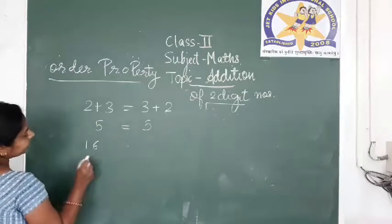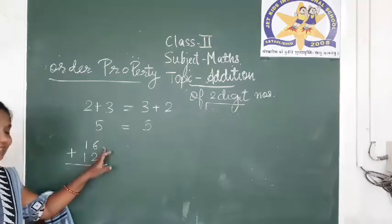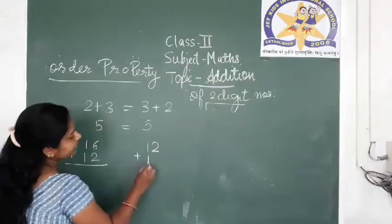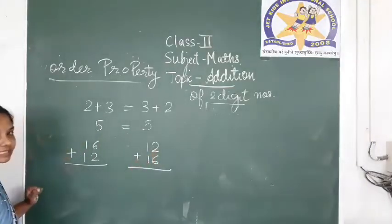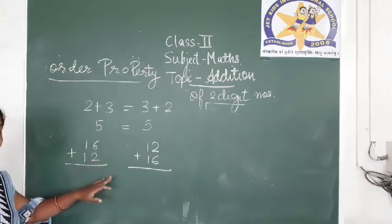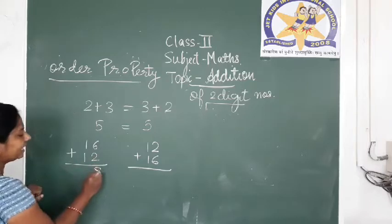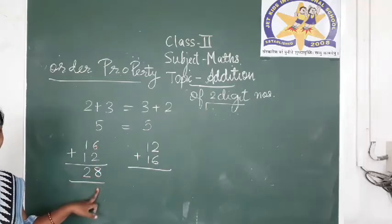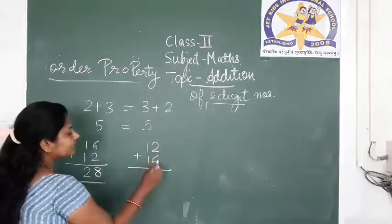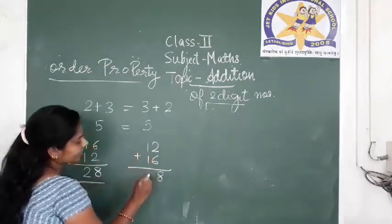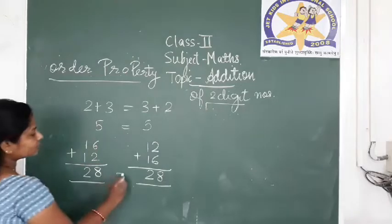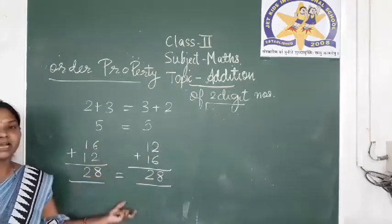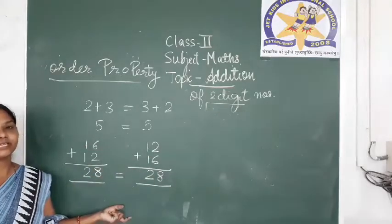For example, 16 plus 12: you are adding 16 to 12. If I change the order — that is 12 plus 16 — I wrote 12 first and then 16. Let us add: 6 plus 2 is 8, and 1 plus 1 gives 28. So 16 plus 12 gives answer 28. Now the other way: 2 plus 6 is 8, and 1 plus 1 gives 28. Both answers are the same — the answer has not changed when we changed the order of the numbers.